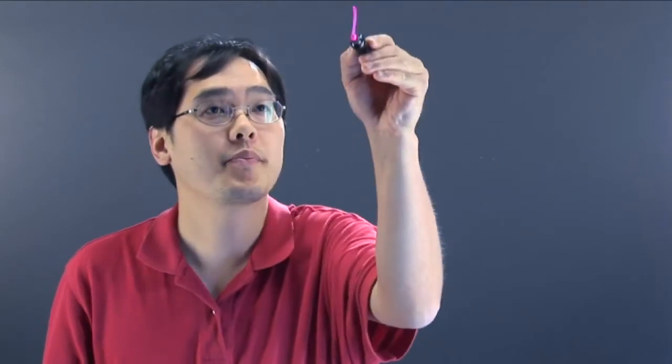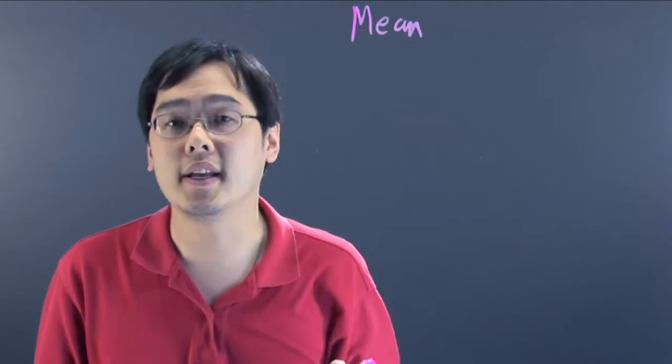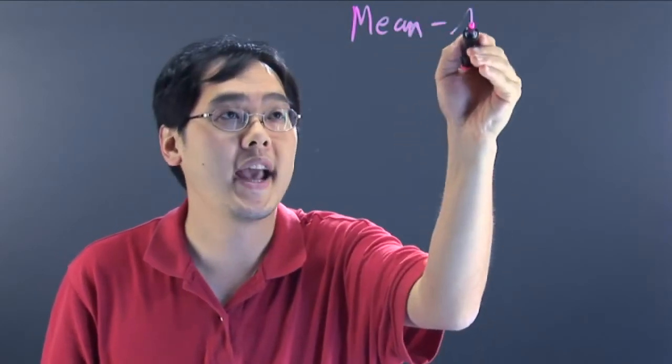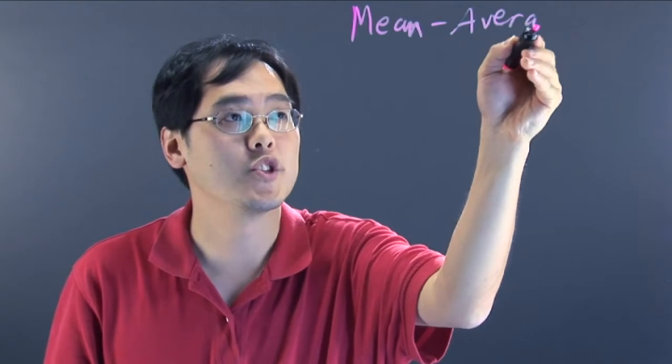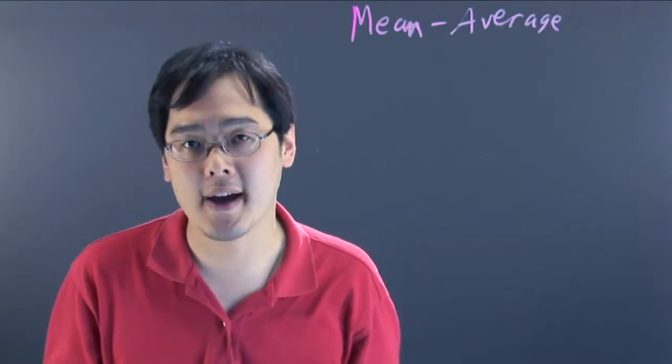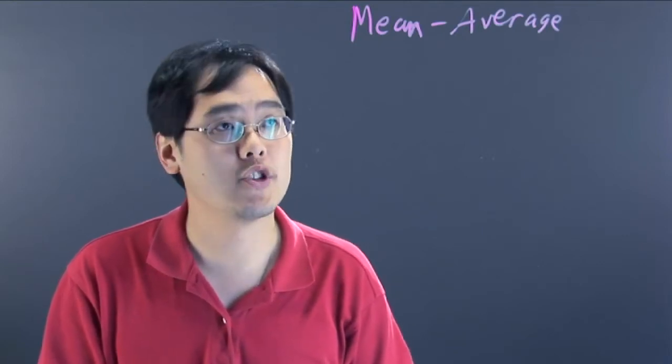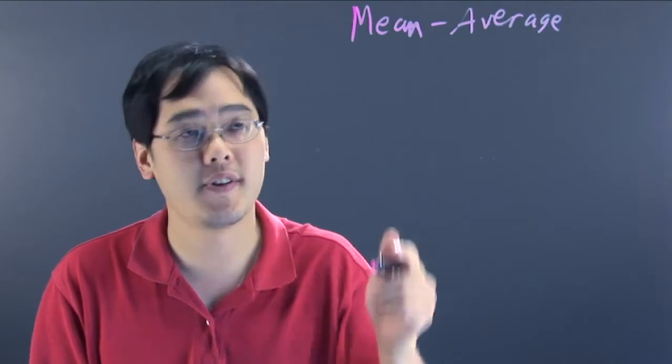So let's talk about first the mean. Now to find the mean, you're finding the average of the values that you have. You're adding up all the numbers that you have and then dividing by how many total data points you actually have at your disposal. So that's a pretty easy one to find.